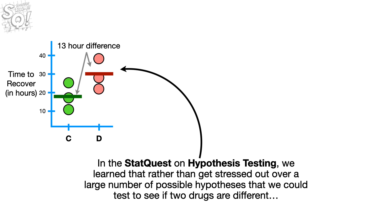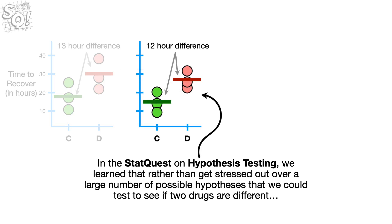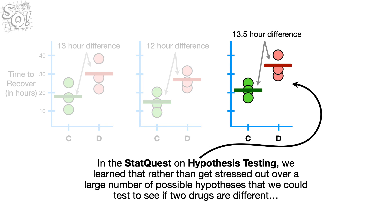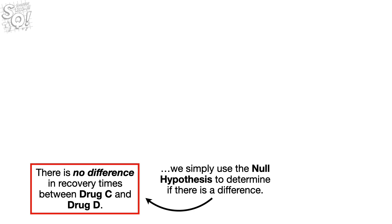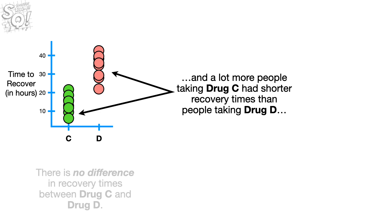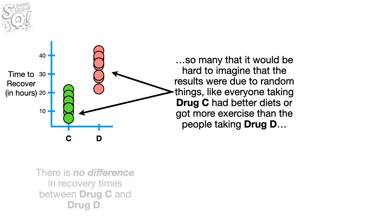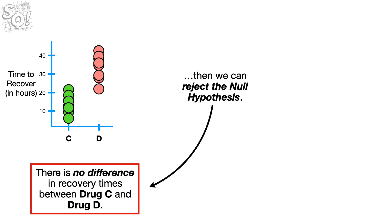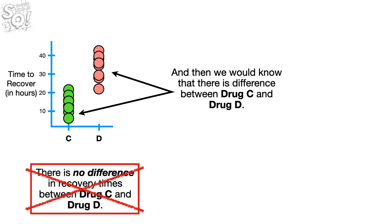In the StatQuest on Hypothesis Testing, we learned that rather than get stressed out over a large number of possible hypotheses that we could test to see if two drugs are different, we simply use the Null Hypothesis to determine if there is a difference. We learned that if we do an experiment with a bunch of people, and a lot more people taking drug C had shorter recovery times than people taking drug D, so many that it would be hard to imagine that the results were due to random things like everyone taking drug C had better diets or got more exercise than the people taking drug D, then we can reject the Null Hypothesis. And then we would know that there is a difference between drug C and drug D.